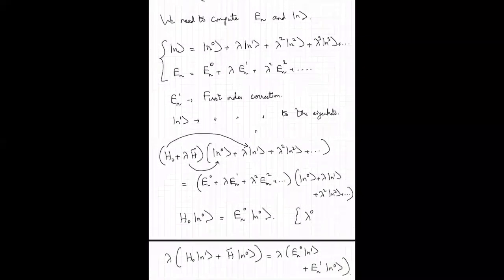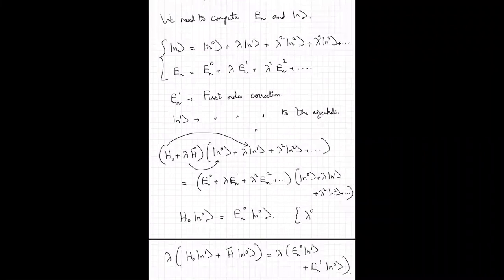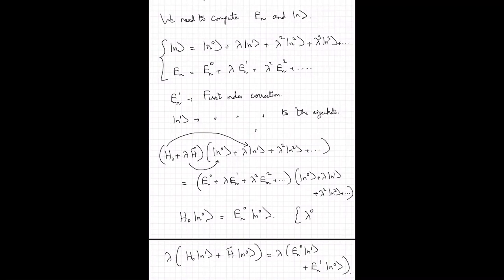Whenever I have a superscript 0, it means the unperturbed part. N1 and EN1 are the corrections to first order in the perturbation. N2 and EN2 are the corrections to second order and so on. As a practical matter, you would almost never be required to calculate second-order corrections to the eigenkets. There are cases where you have to calculate the second-order correction to the eigenenergies, but almost never the eigenkets. So the things that are useful — that you basically have to understand — are the zeroth-order terms, and the first-order eigenkets and energies. These are the things that typically one has to calculate in problems in perturbation theory.